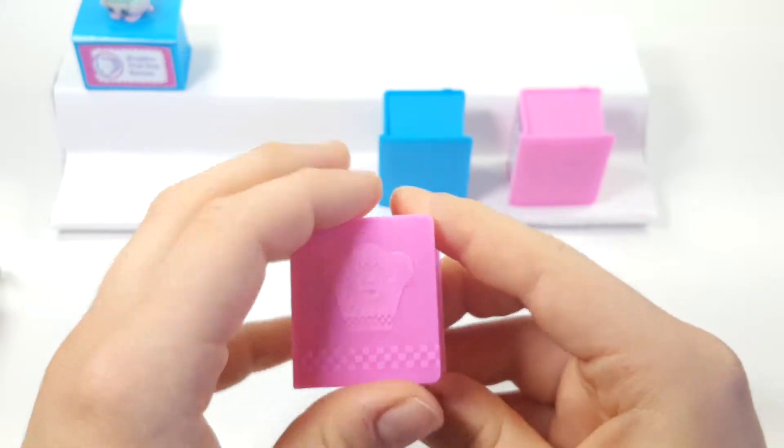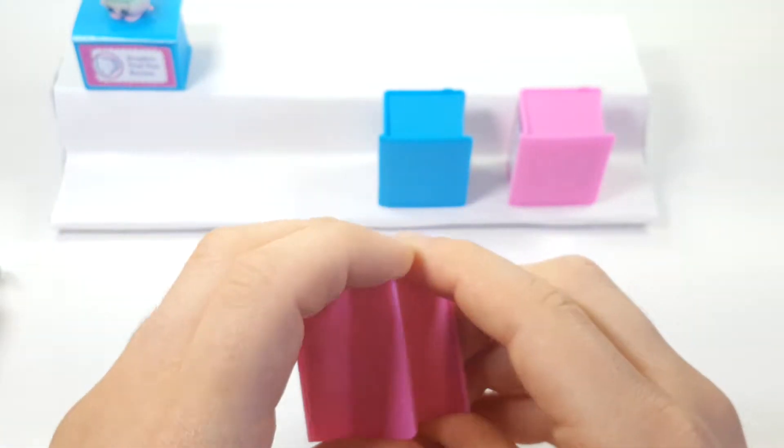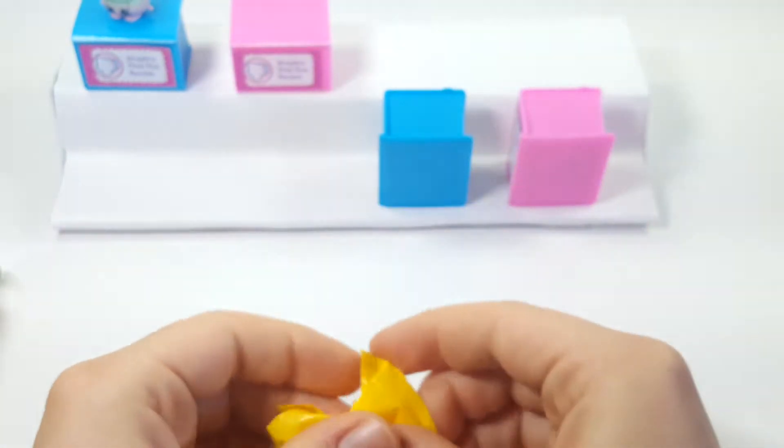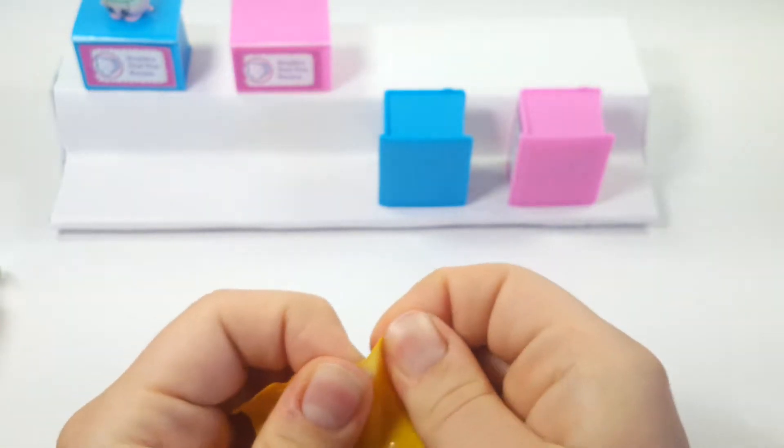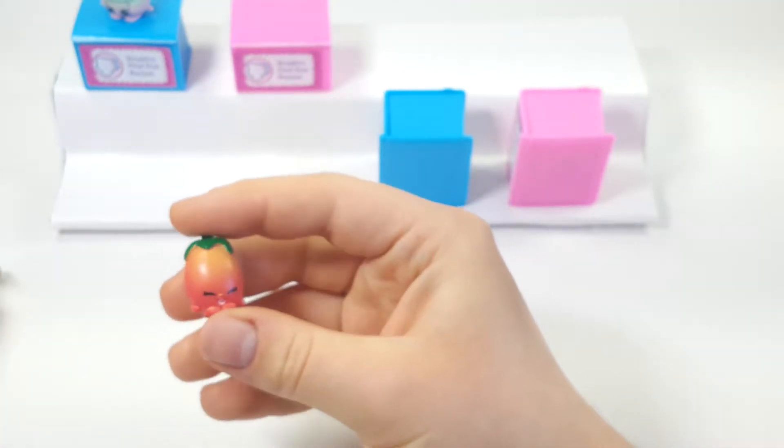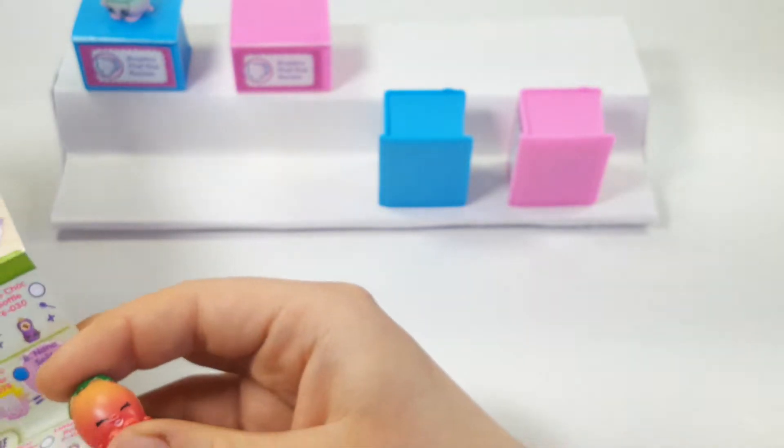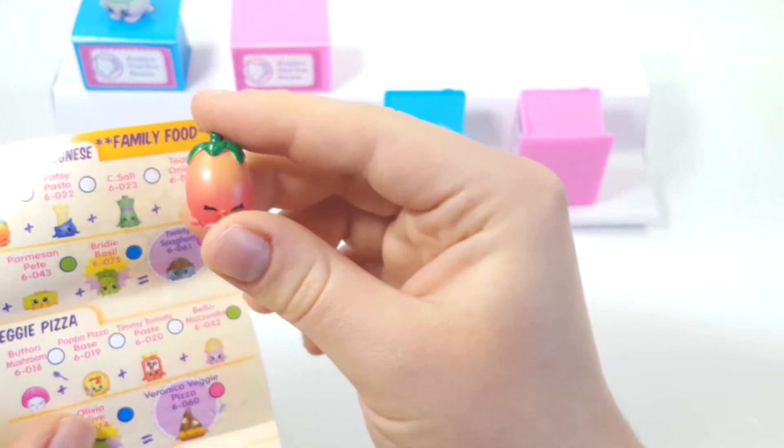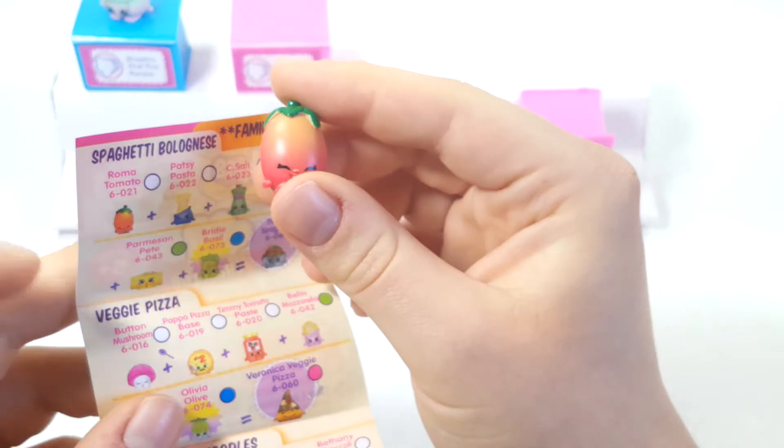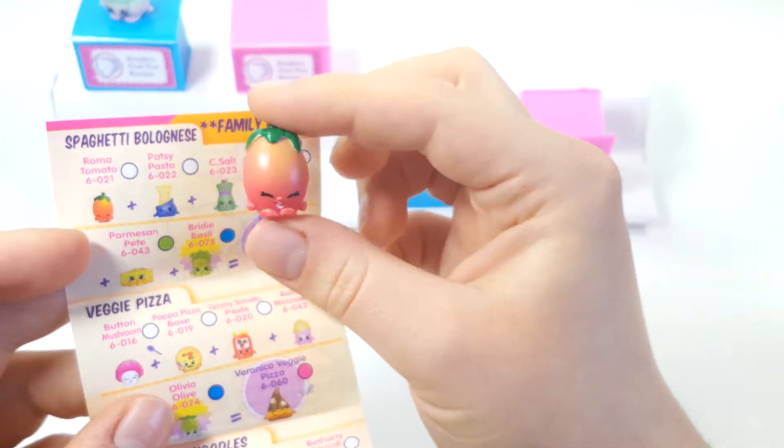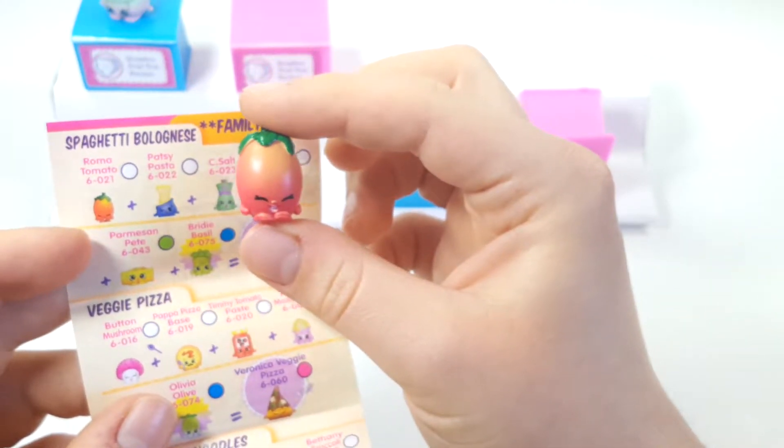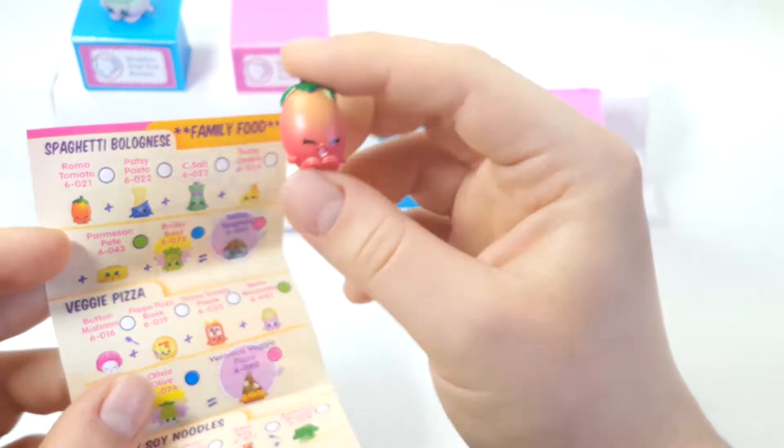And now let's open up our pink recipe book. And, oh, dropped it. Let's see who we have. Dropped him on the floor. We have this one right here, who is Roma tomato. There they are. Right there. Very cool.